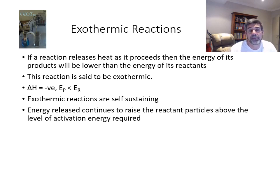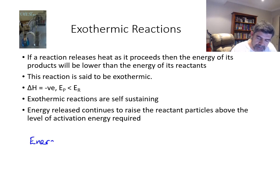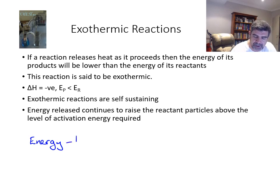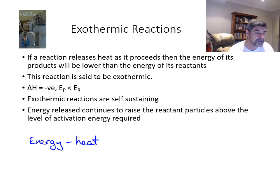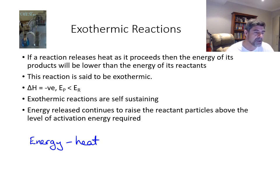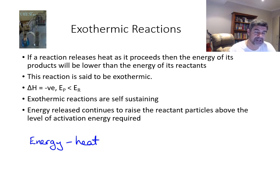One of the important indicators of a chemical change is a change in energy. We identify that change in energy usually by relating it to heat energy specifically. Sometimes we hear a bang, so sound energy might be produced. Sometimes we see very bright light, so light energy might be produced. But the easiest way to measure energy change is to measure change in temperature and hence the change in heat.